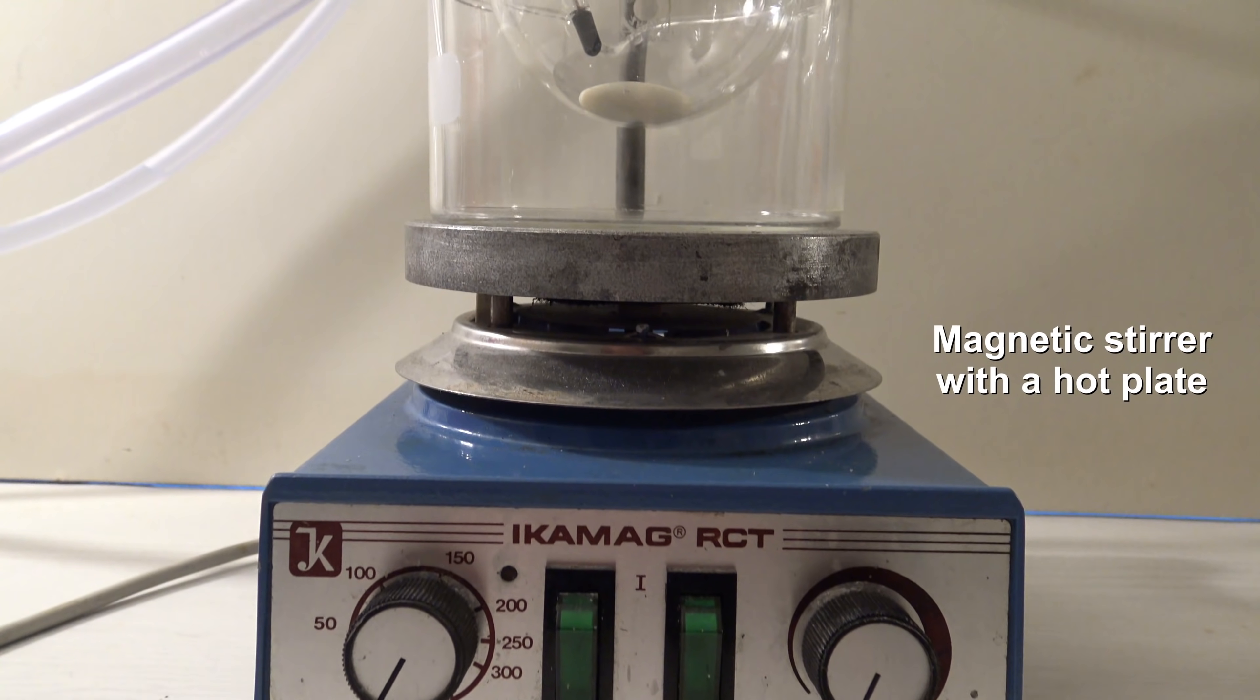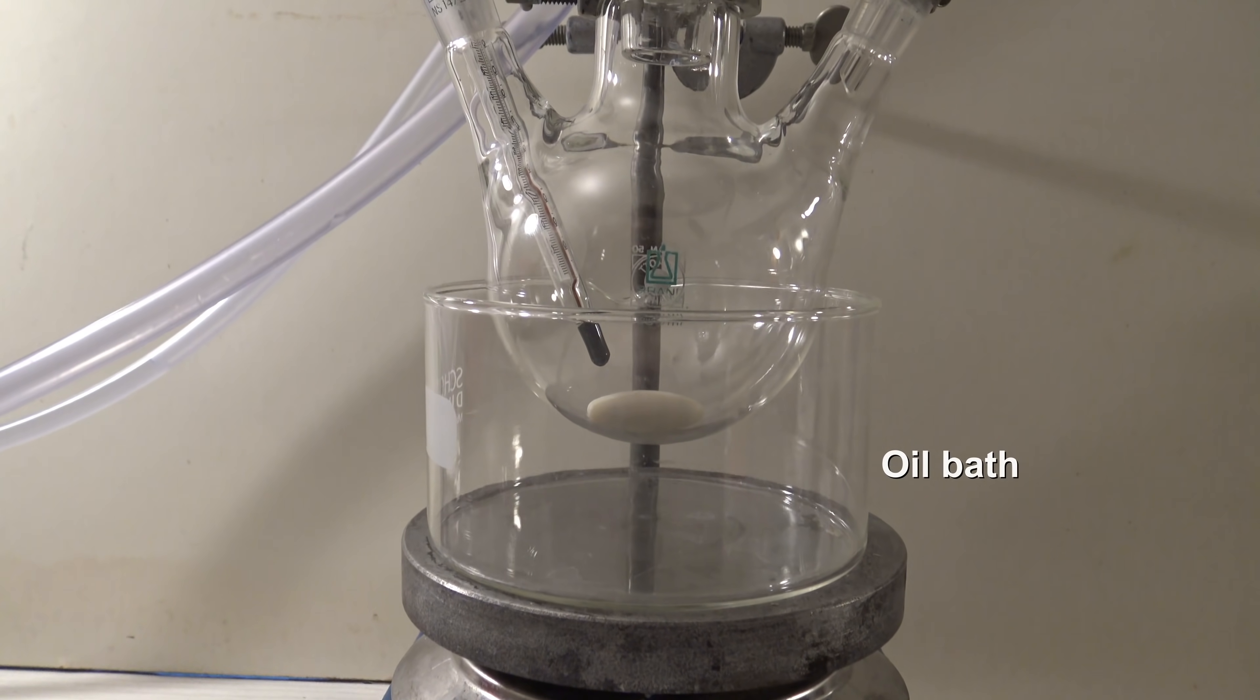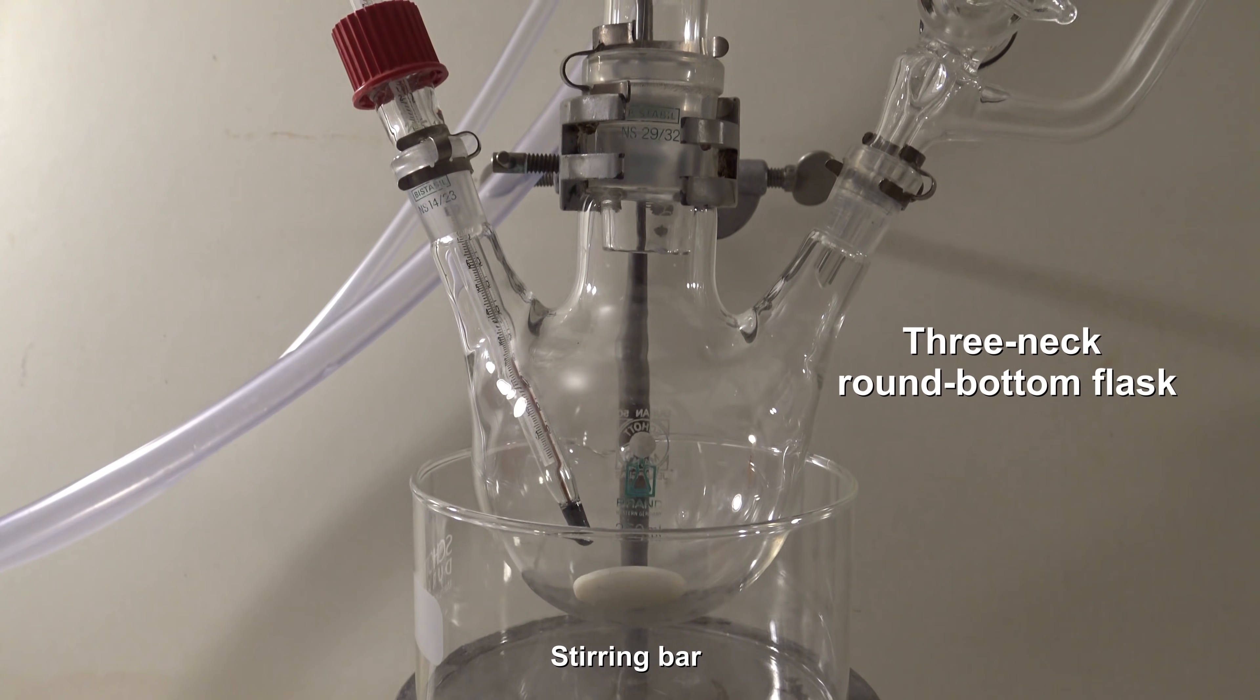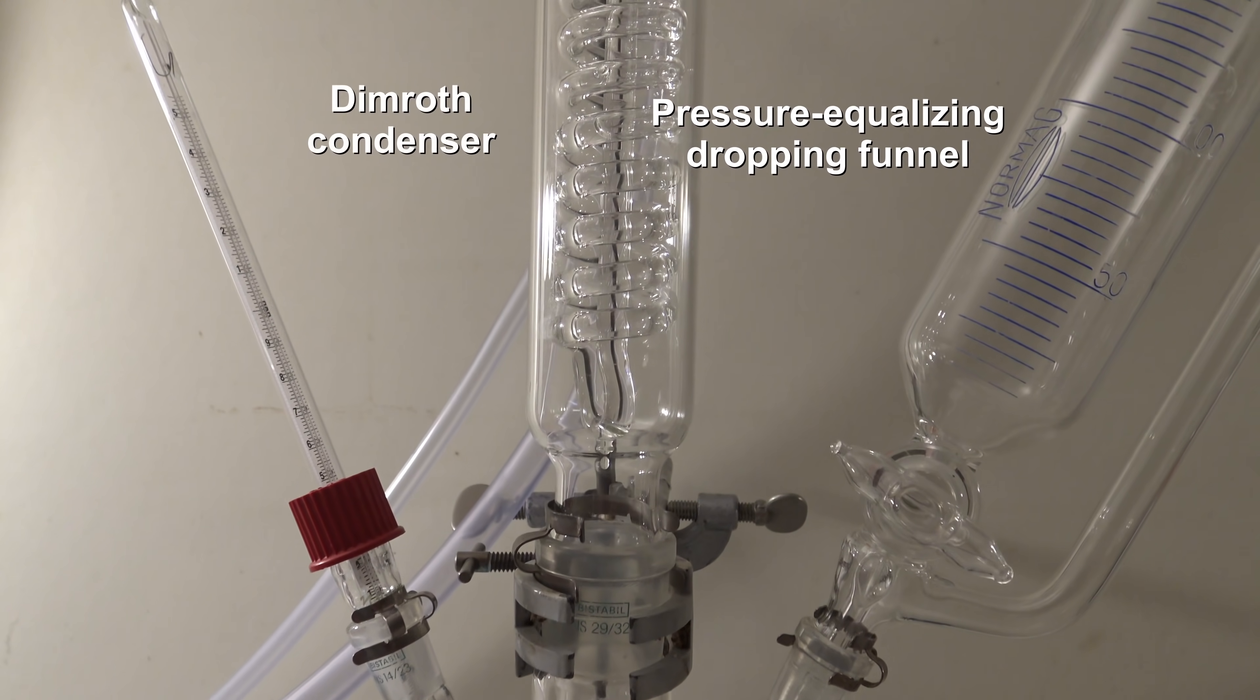The setup is a magnetic stirrer with a hot plate and an oil bath. In the oil bath a three-neck ground-bottom flask is placed with a stirring bar. On top is a thermometer, a pressure-equalizing dripping funnel, and a dimroth condenser.